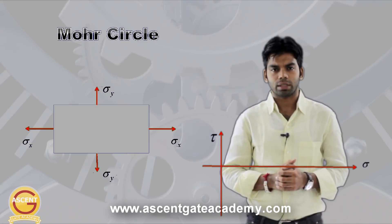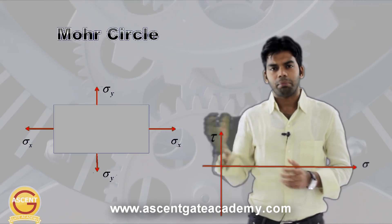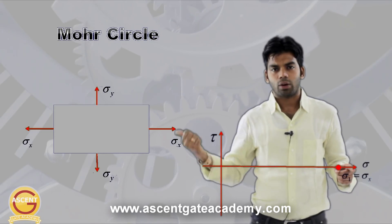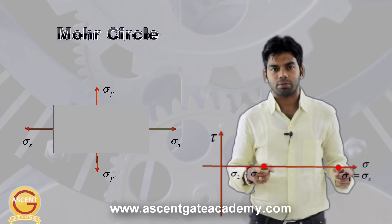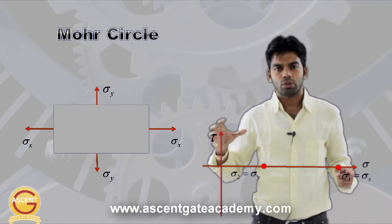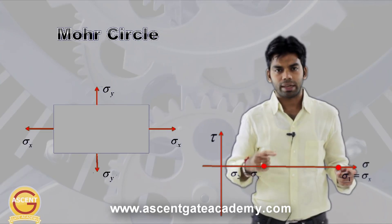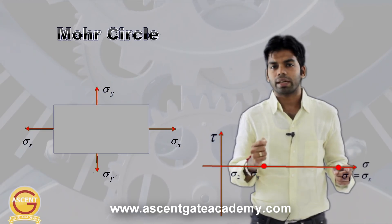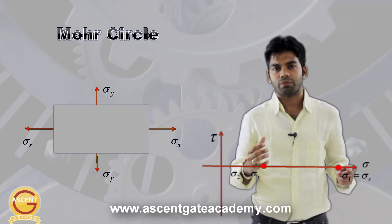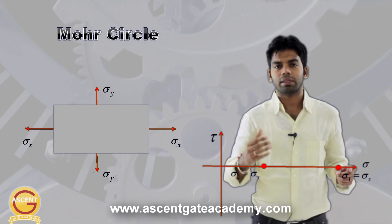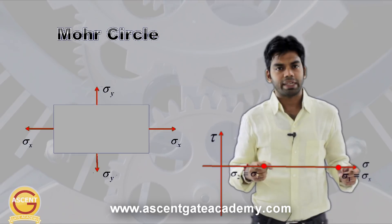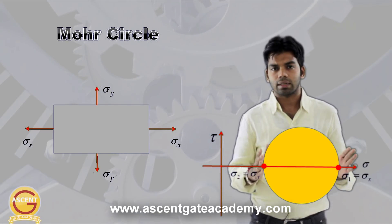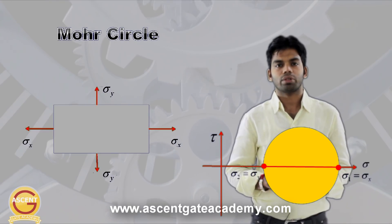To draw the Mohr circle for this case, take an appropriate scale and mark sigma_x and sigma_y on the x-axis, since both are normal stresses. In both planes only normal stresses act, so sigma_x is at one point and sigma_y at another. Because no shear stress is acting, these normal stresses sigma_x and sigma_y are nothing but the principal stresses. The distance between the two is taken as the diameter of the circle, which is the Mohr circle.